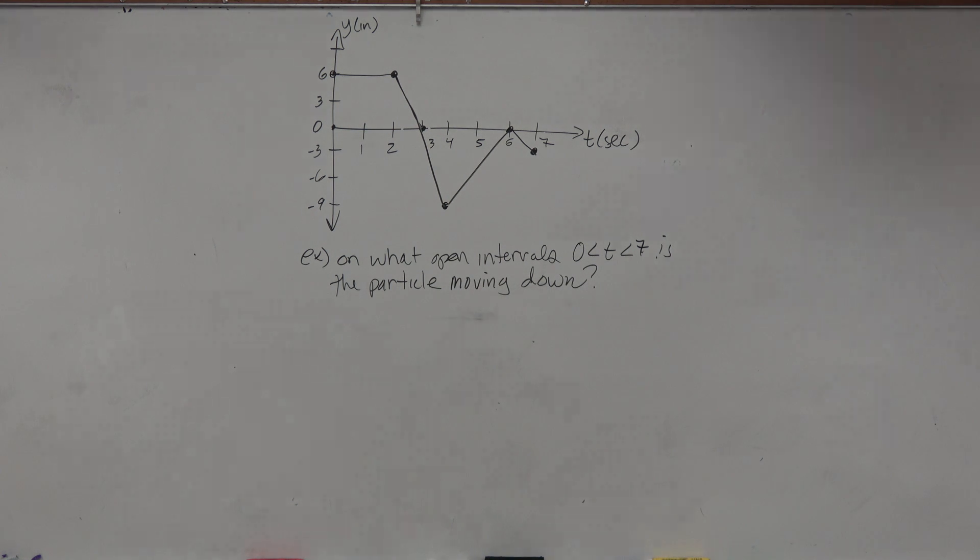The open intervals of 0 to 7, when is the particle moving down? And then we have to justify.